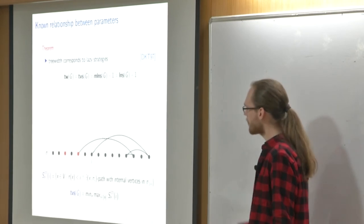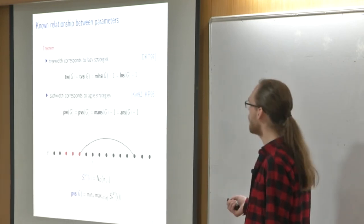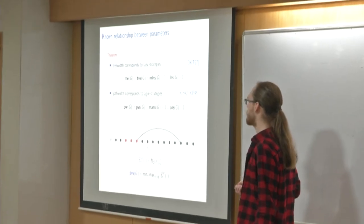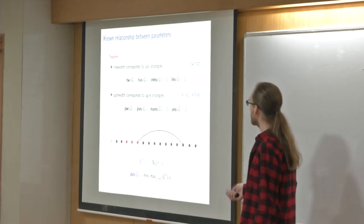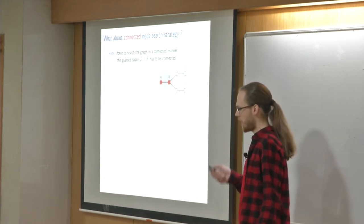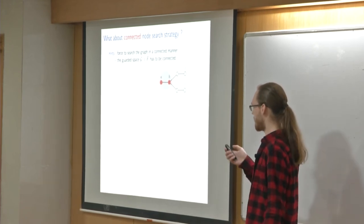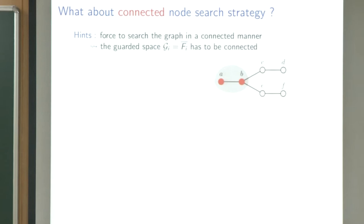So pathwidth corresponds to agile strategies — and monotone doesn't change anything there either. Treewidth corresponds to lazy strategies. These relationships are well known. The key question of this paper is: what happens when we also enforce connectedness on the search strategy? The guarded space — where the robber cannot be — must always be connected. You cannot teleport and deploy a searcher at a random place; you always have to expand the connected zone.